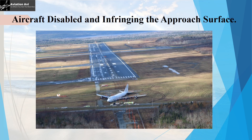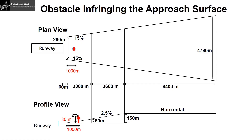There may be a case when an aircraft is disabled at a particular distance from the threshold and the tail of the aircraft is infringing the approach surface. In these cases you may have to displace the threshold to continue operations on the runway. We will consider the Airbus A380, which has a tail height of 24.1 meters, but we will consider the case where the nose is bent down and the tail is elevated such that it forms an obstacle of 30 meters height at a distance of 1,000 meters from the beginning of the approach surface.